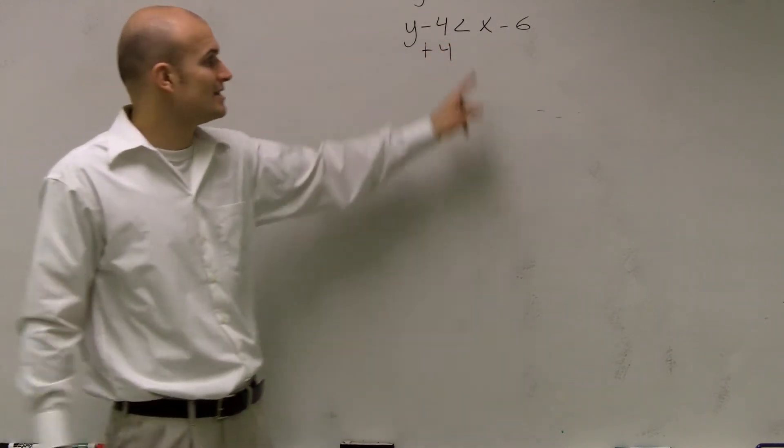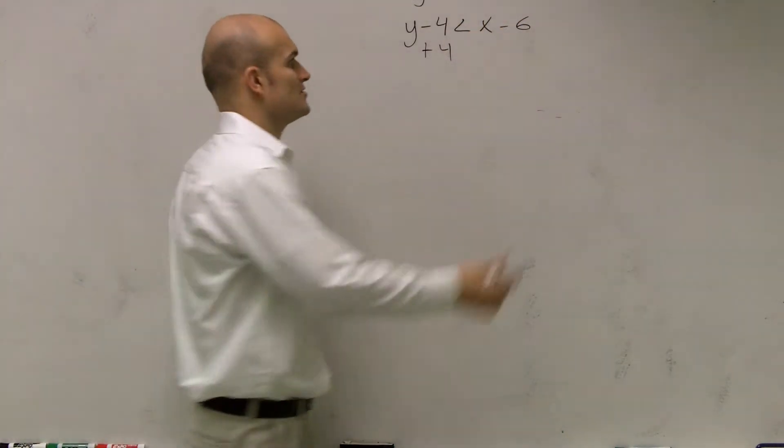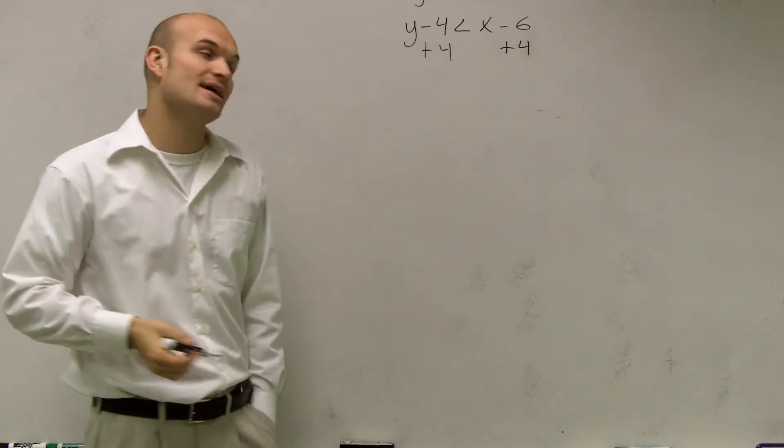Now here comes the big question. Should I add the 4 to the x, or should I add the 4 to the negative 6? Hopefully you guys remember, you can only add the 4 to the negative 6, because that's its like term.